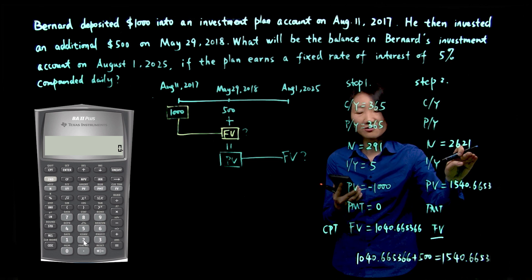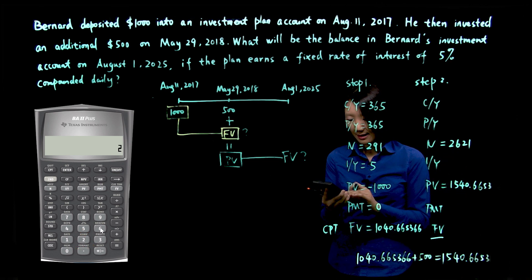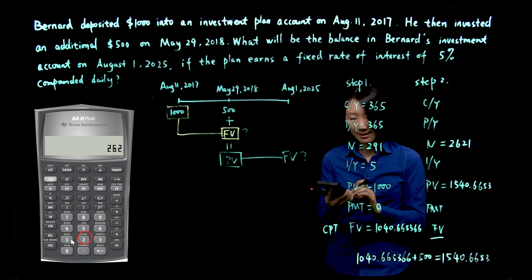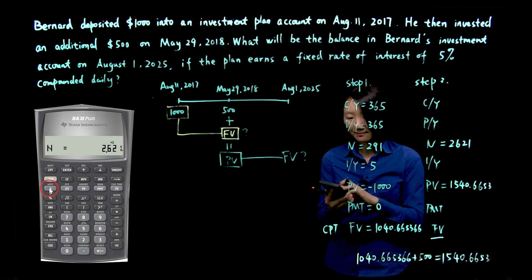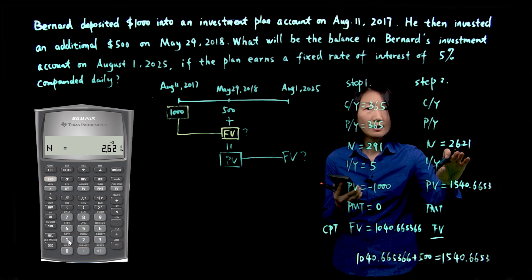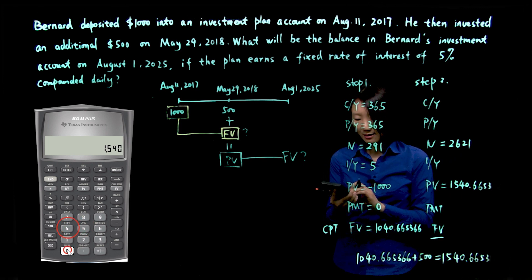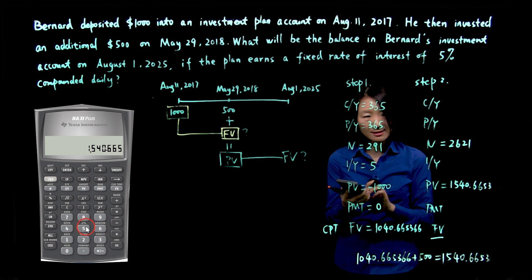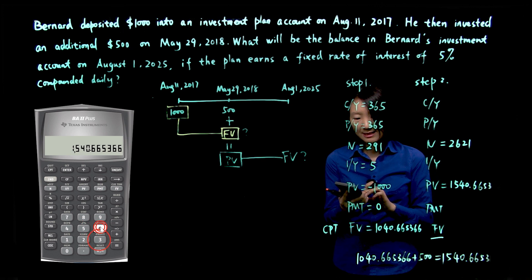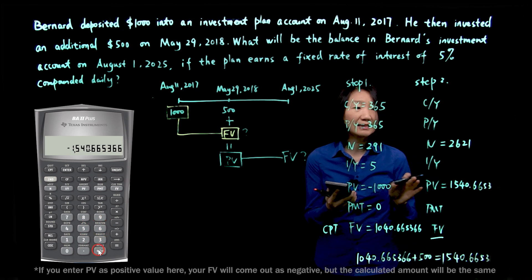I go to N is 2621. Everything else hasn't changed. PV has changed to 1540.665366. I can make it negative for PV.